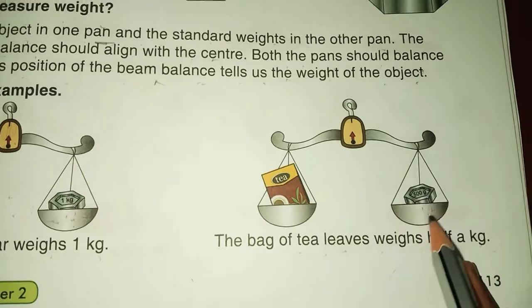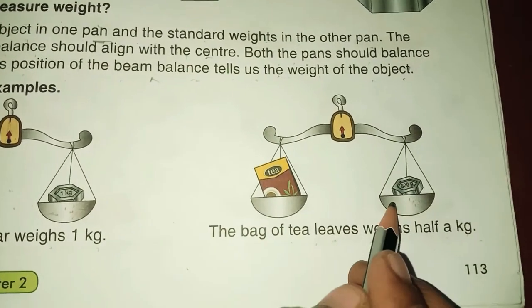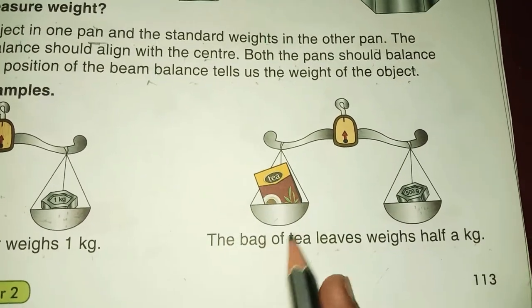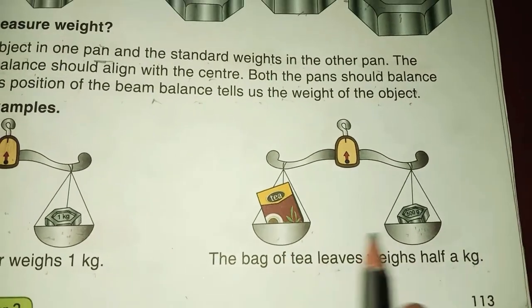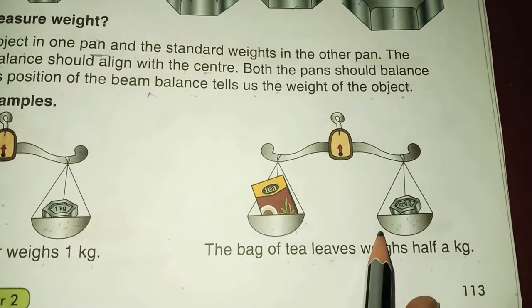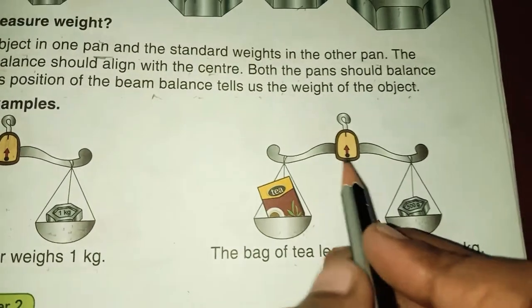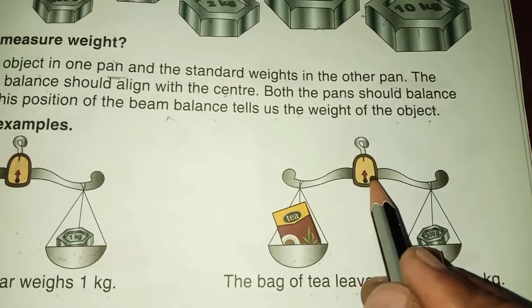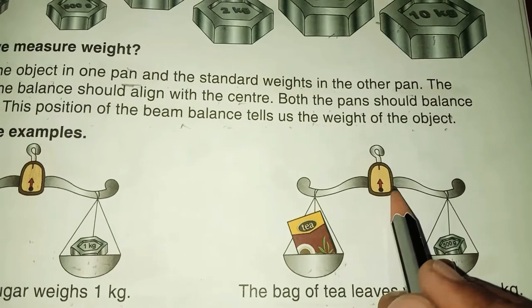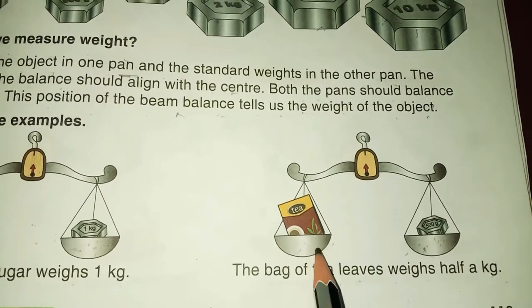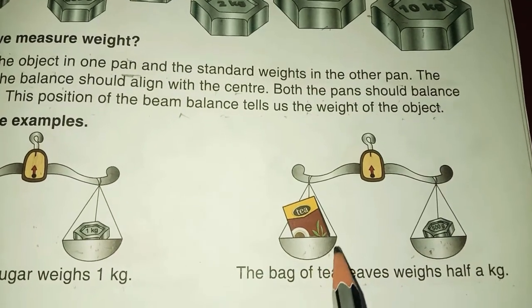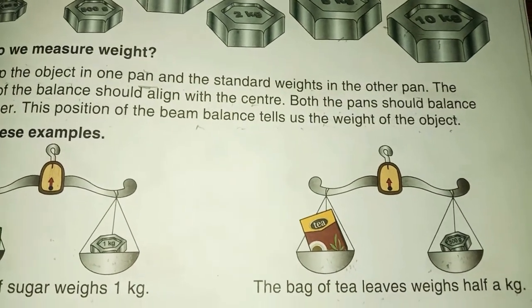500 gram standard weight is in one side and the bag of tea leaves in the other pan. These pans are showing equal and the position of the pointer is aligned with the center. It means this tea leaves weighs half a kg.